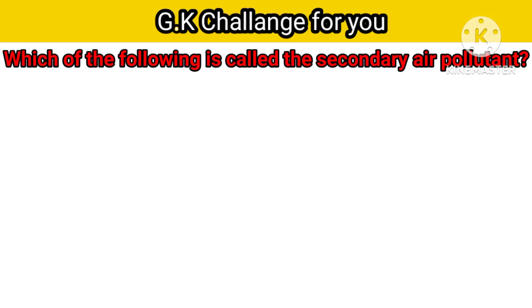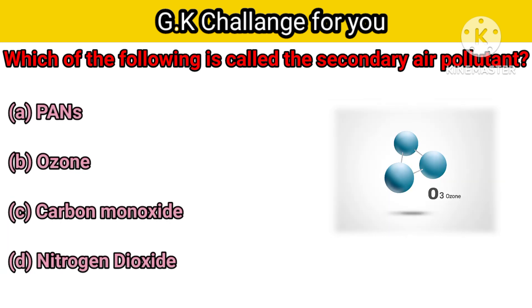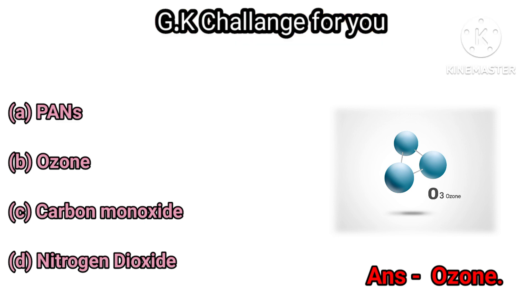Second question: Which of the following is called secondary air pollution? Option A: PANs, B: Ozone, C: Carbon Monoxide, D: Nitrogen Dioxide. Your right answer is Ozone.